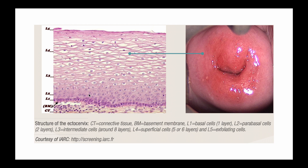On this diagram we find the structure of the ectocervix, which is made up of the stratified squamous epithelium. As the name implies, it is found in layers — in strata. Starting from the connective tissue below, we have the basement membrane, then the basal cells, parabasal cells, intermediate cells, superficial cells, and moving upward to the exfoliating cells above.